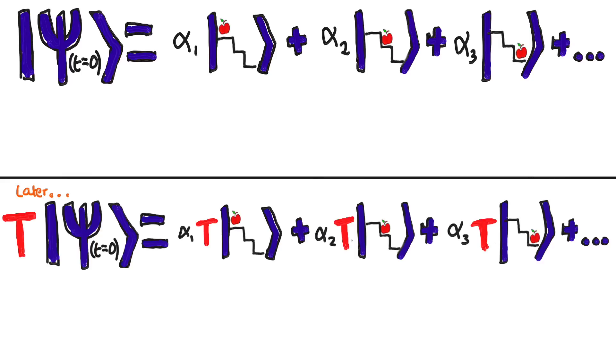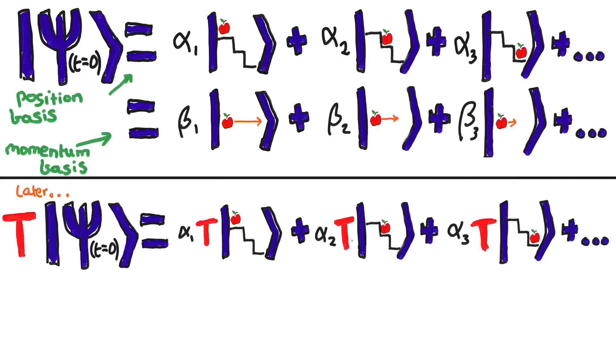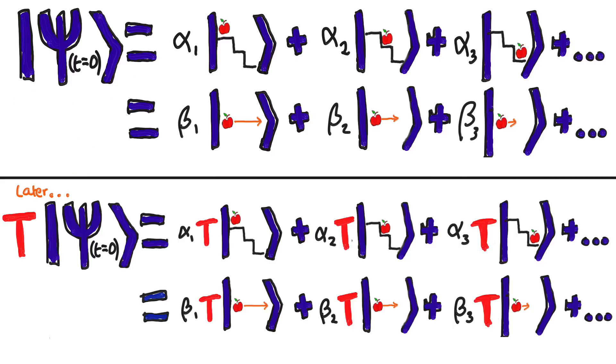It even holds if you write up that same state in a different basis. For example, if I change to the momentum basis here, the same rule applies, and so then these two states are equal to each other. They're both the future state. So the general statement of linearity is this.